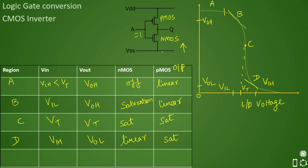Region E: when the input is greater than or equal to VDD, the output is low — VOL or even lower. The NMOS is fully on and discharging, entering the linear region. The PMOS turns off because it is receiving a very high gate voltage. Output is low. This is how we can explain all the inverter characteristics of CMOS.